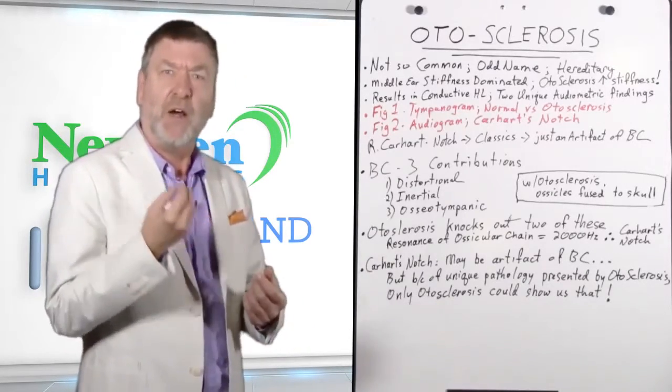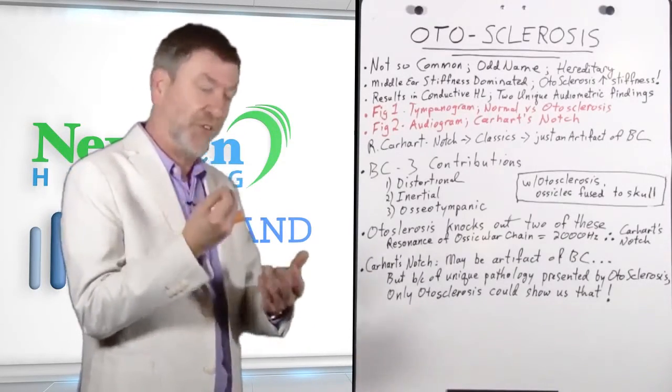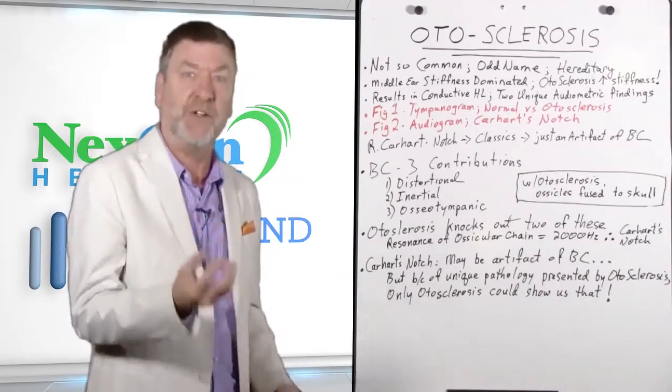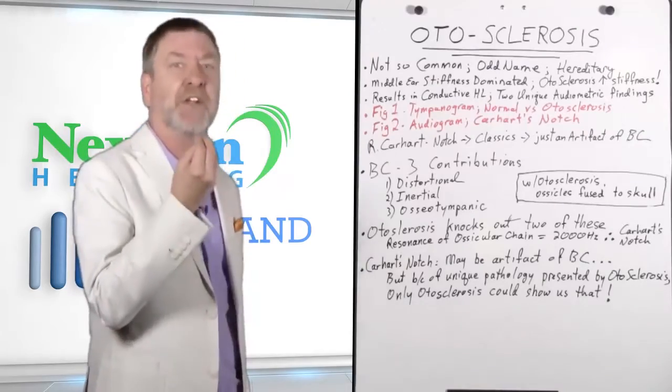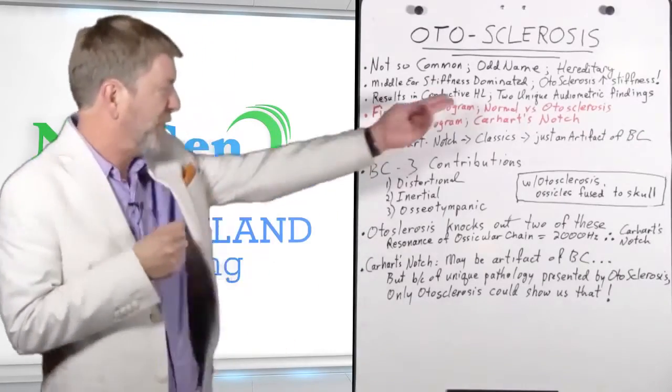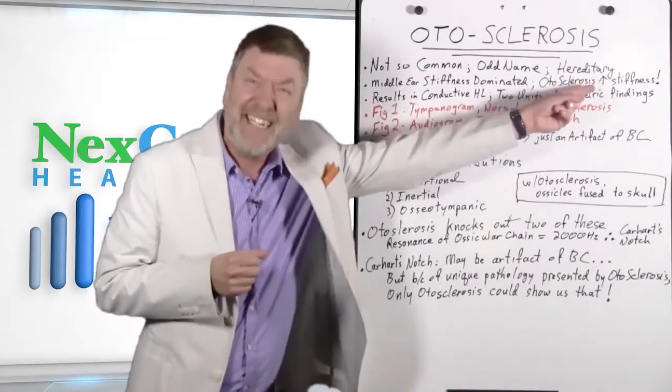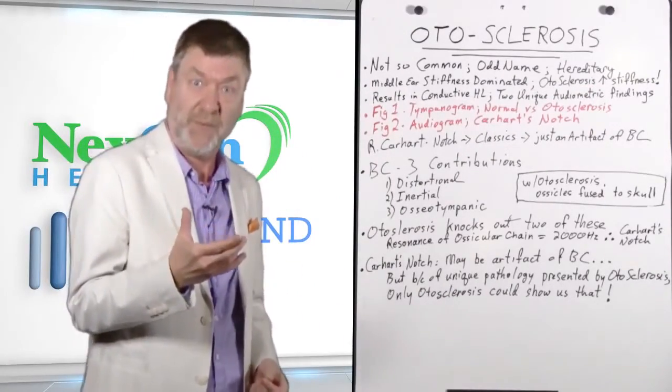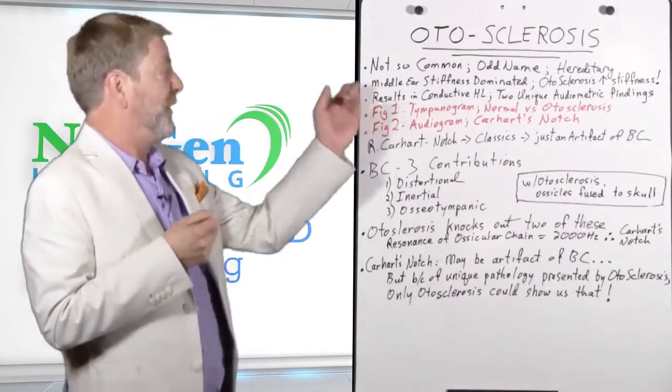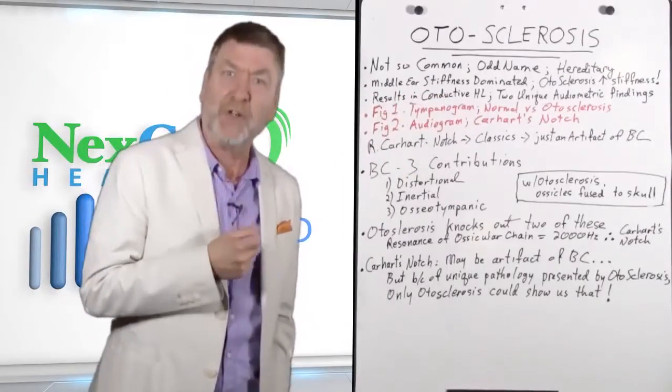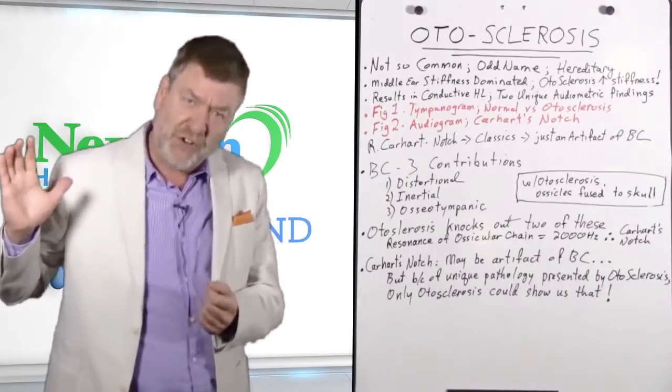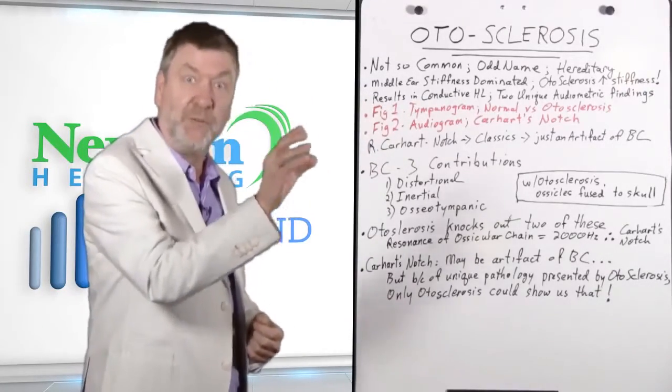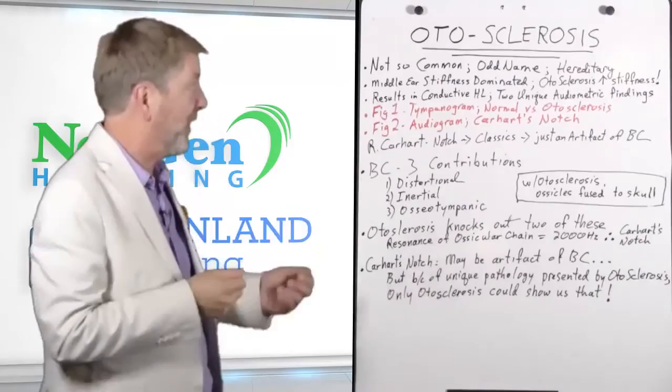All mechanical systems offer impedance, which is comprised of mass, stiffness, and resistance. The middle ear is a stiffness dominated system. And otosclerosis serves to actually increase the stiffness of this already stiff system. As a result, you will get conductive hearing loss with otosclerosis, a prevention of sound being conducted through the middle ear system to the inner ear or cochlea.